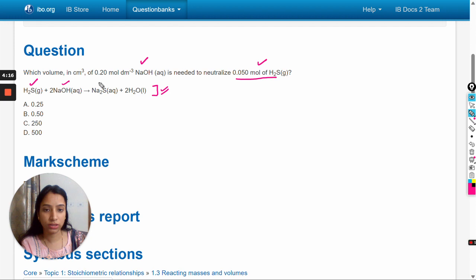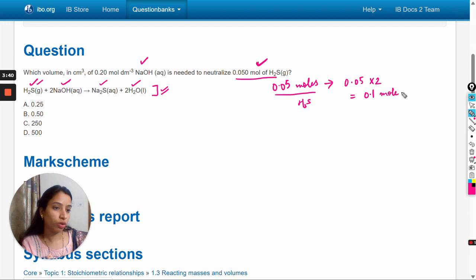It produces 1 mole of Na2S and 2 mole of H2O. So H2S reacts with its double amount of NaOH. Here are given the actual amount of H2S, 0.05 moles, and it will react with its double amount of NaOH. So 0.05 moles of H2S react with 0.1 mole of NaOH.